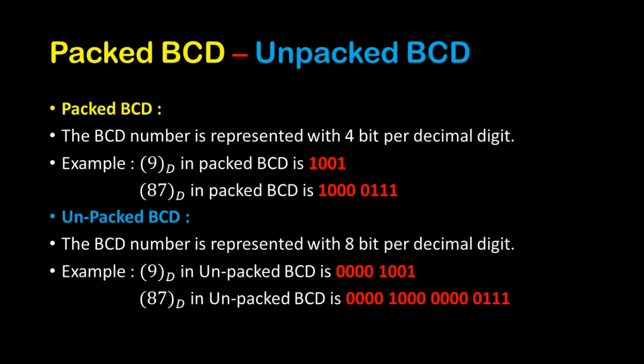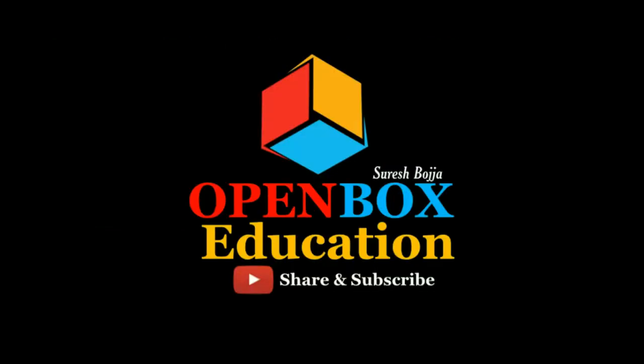And for 7, it is represented as 0, 7 — that is 0000 0111. So this is the representation of an Unpacked BCD number.